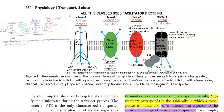In the group translocator, the energy for this process is derived from energy-rich compounds formed through glycolysis — for example, phosphoenolpyruvate, which serves as the energy-donating compound. This energy is used for the transport reaction.